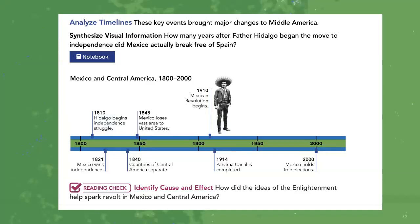Then we're going to be looking at timelines, which goes hand-in-hand with the analysis skills we'll be practicing. We're going to be familiarizing ourselves with key events and how timelines are used to summarize key events when looking at major historical concepts like the Mexican Revolution.